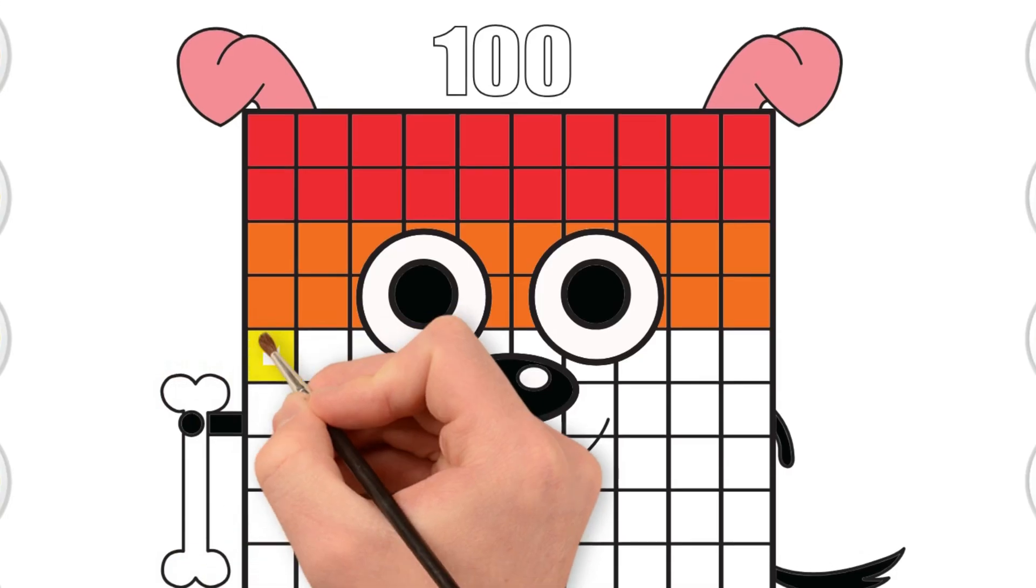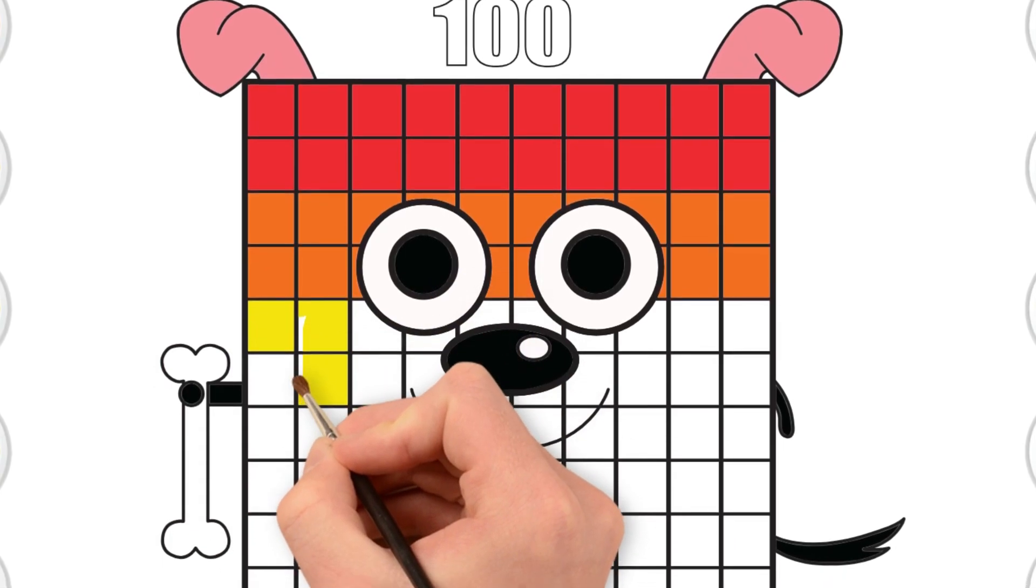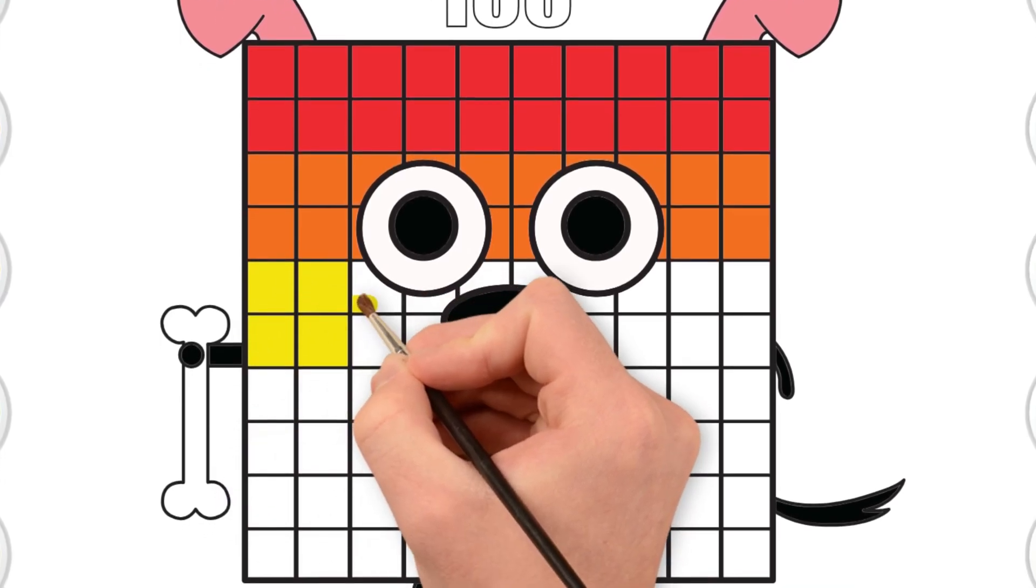Color the fifth and sixth rows yellow. Let's count together. Fifty and sixty. Can you point to something yellow around you? Maybe a toy. A pencil. Or even the sun in a picture.